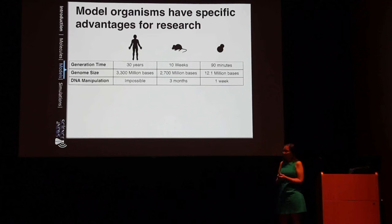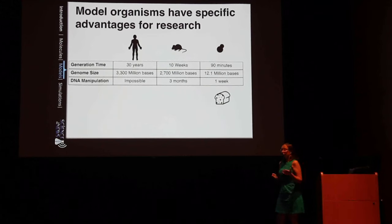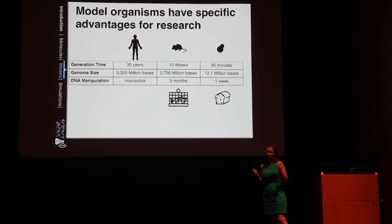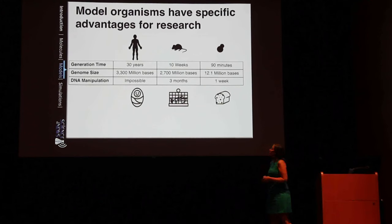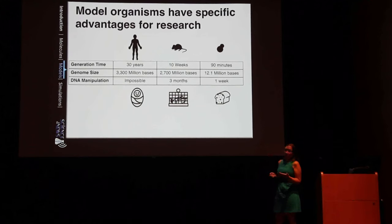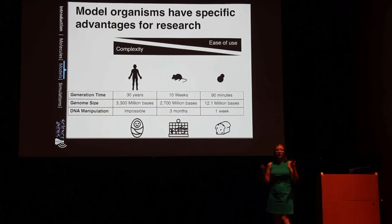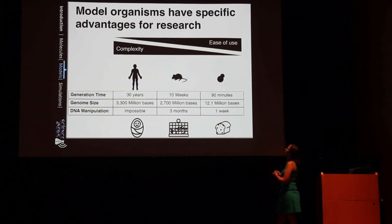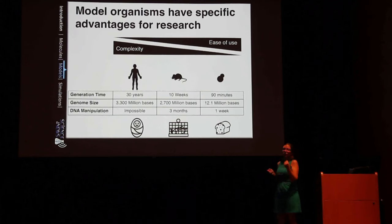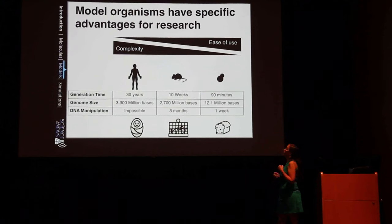To really hammer this point home, just think about how much time and effort it takes to make a loaf of bread versus raise a pet mouse versus bear and raise a child — these are very different scales. Scientists have to think about these differences too. When designing an experiment, a scientist has to weigh how complex an organism is and how similar it is to human biology, versus how easy it is to use and how quickly it will advance our knowledge of a particular disorder.